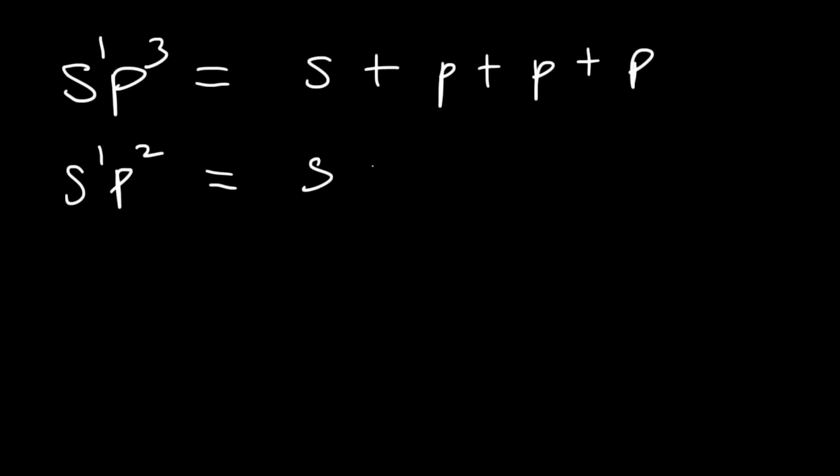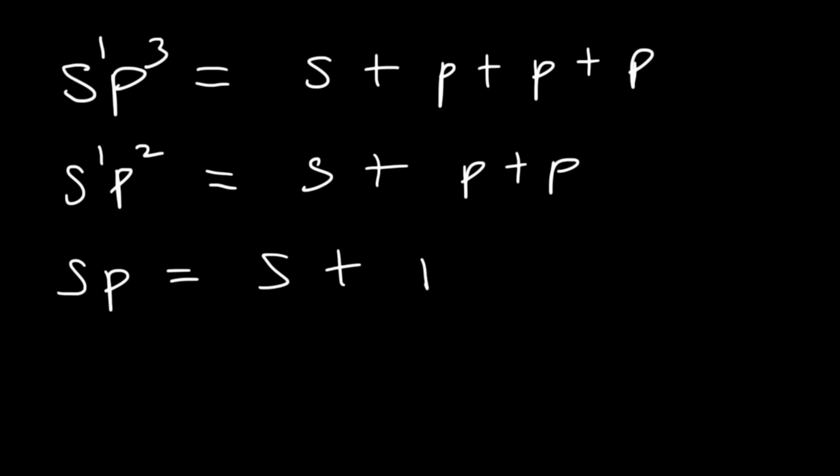sp2 is a hybrid of an s orbital and two p orbitals. And sp is a hybrid of s and one p orbital.